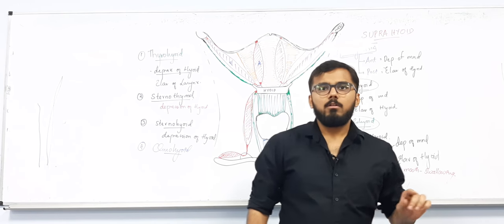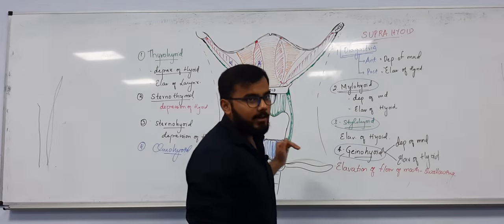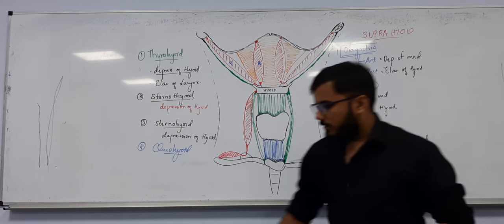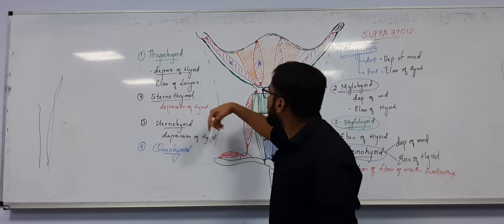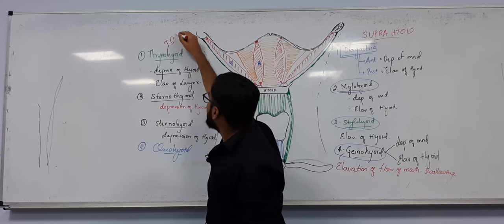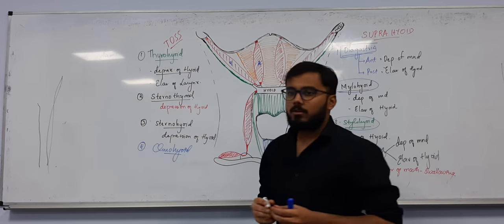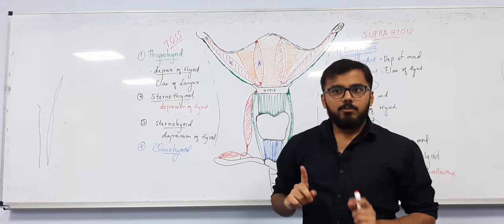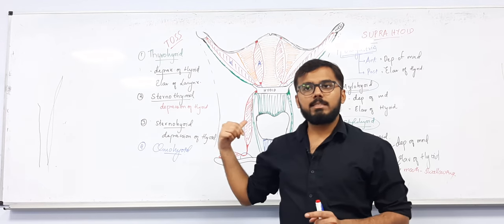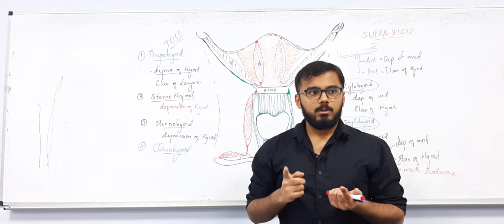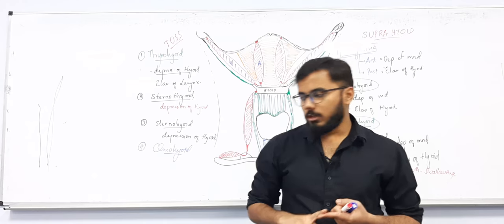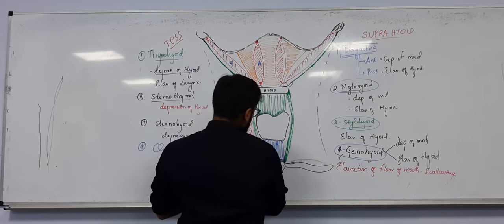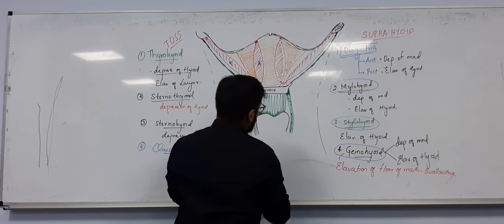Now you understand the list of suprahyoid and infrahyoid muscles. Apply your own mnemonics to remember them. Understanding this is the basic foundation for the triangles of the neck, which we'll cover next.